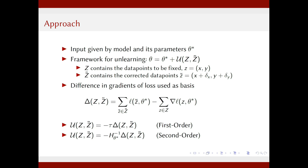The Hessian matrix is quadratic in the number of model parameters. So if you have a neural network with millions of parameters, you will have trillions of entries to store and then invert, which requires careful thought about how to make this computationally feasible.